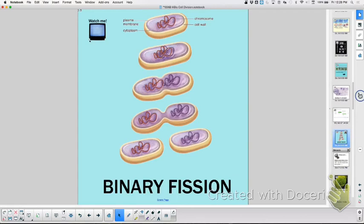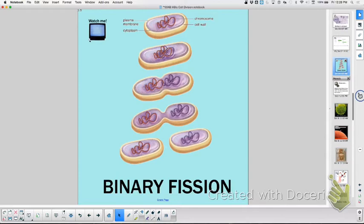We then said bacteria are a little bit different. They do not have linear chromosomes like we do. They have single circular chromosomes. So they undergo binary fission.